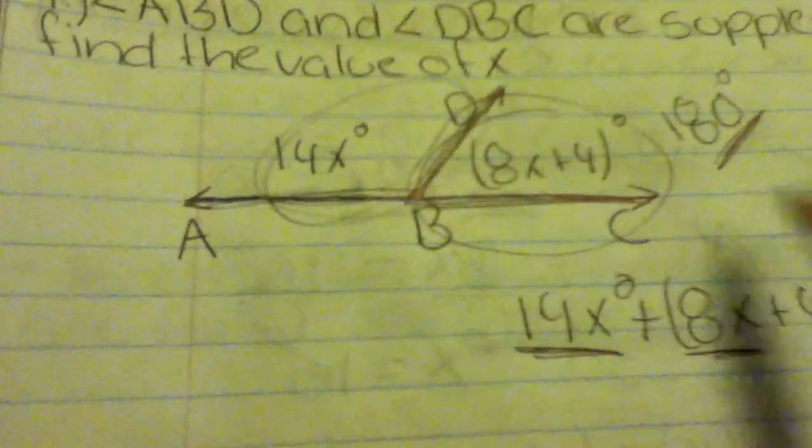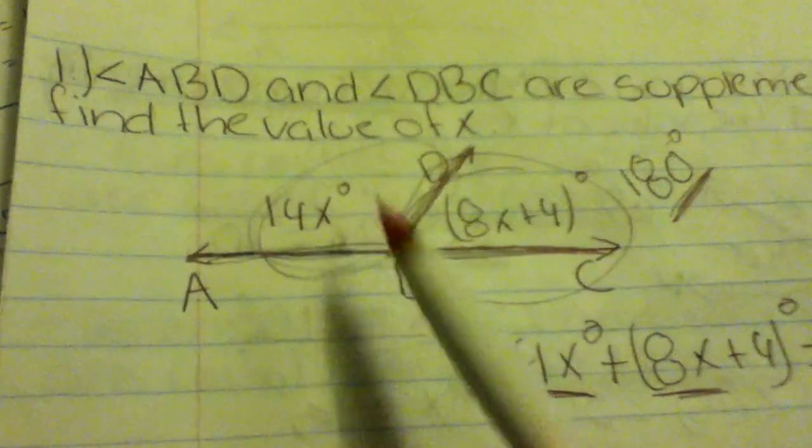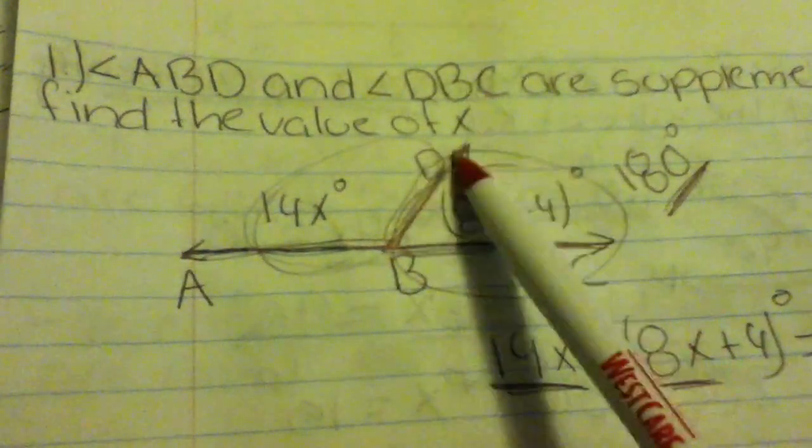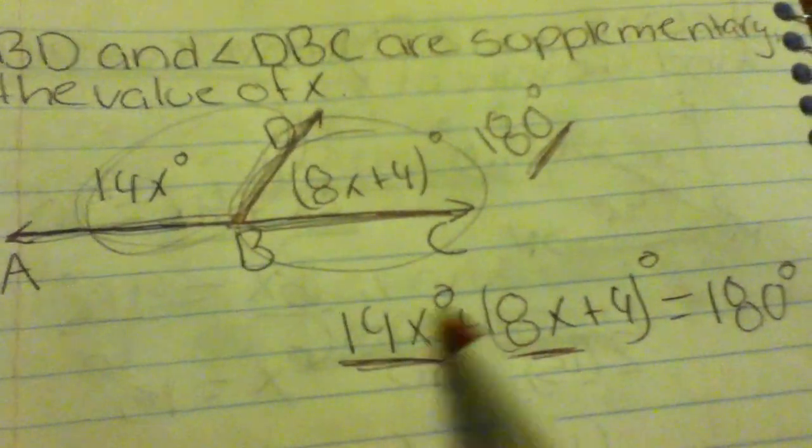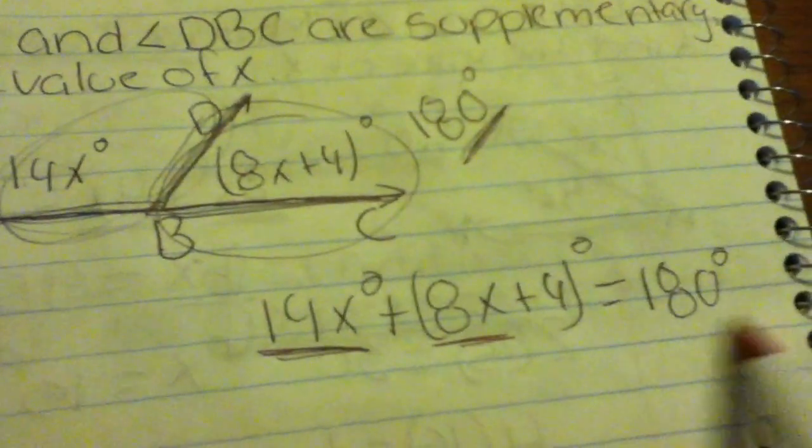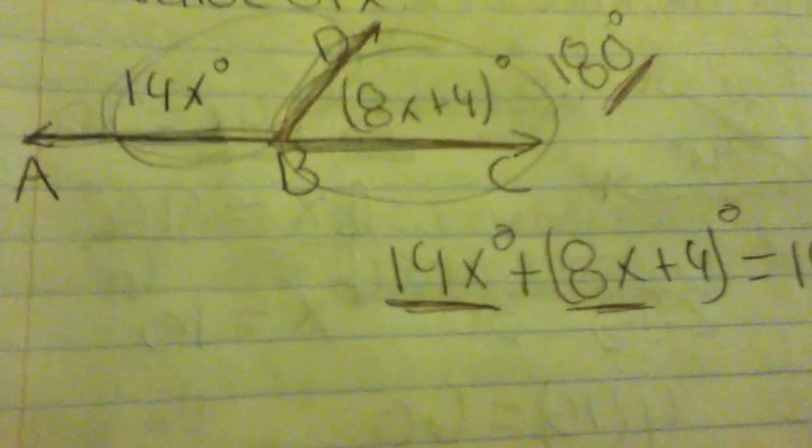We know that angle ABD is 14x degrees and angle DBC is 8x plus 4 degrees. If you add them together you get 180 degrees. The first step to solving for x is to combine like terms.